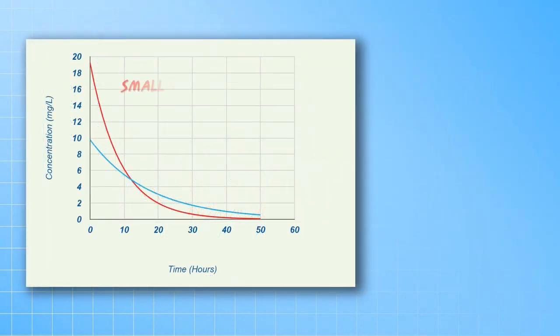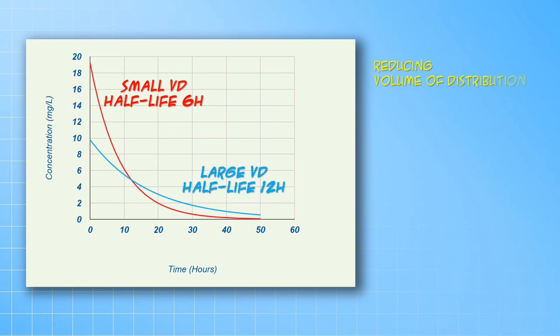Next, we will look at the effect of reducing the volume of distribution. In this single dose plot, which you have seen in an earlier video, you can see that as the volume is decreased, the C0 or concentration at zero time proportionately rises. The half-life is reduced, but the area under the curve is unchanged.